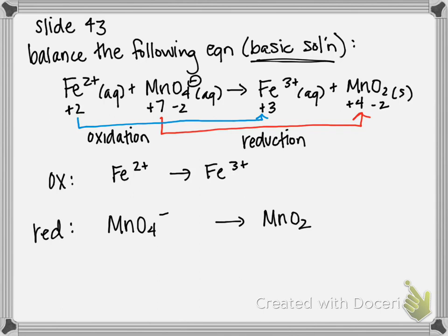Now the next step is to balance our elements. In the oxidation, we have 1 iron on each side, so we're done with that. In our reduction, we have 1 manganese on each side, but we have different numbers of oxygen. So on the reactant side we have 4, product side we have 2. So to balance oxygens, remember we add water. Since we have 4 oxygens on the reactant side and 2 on the product, I'm going to add 2 water molecules. And now we have balanced oxygens on each side.